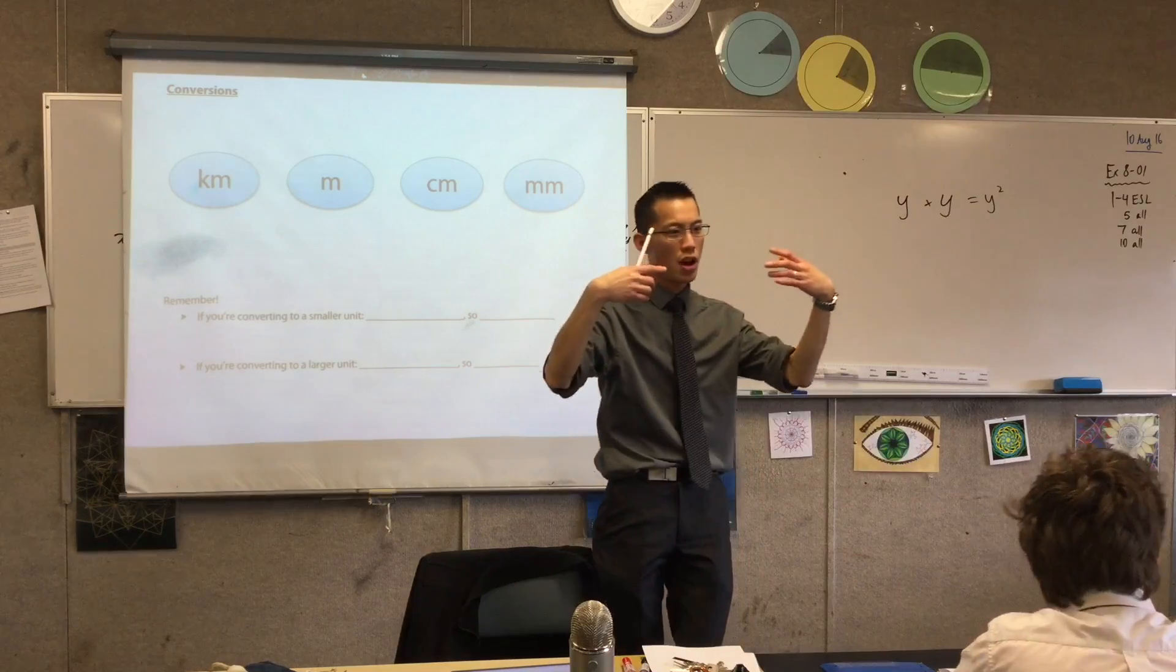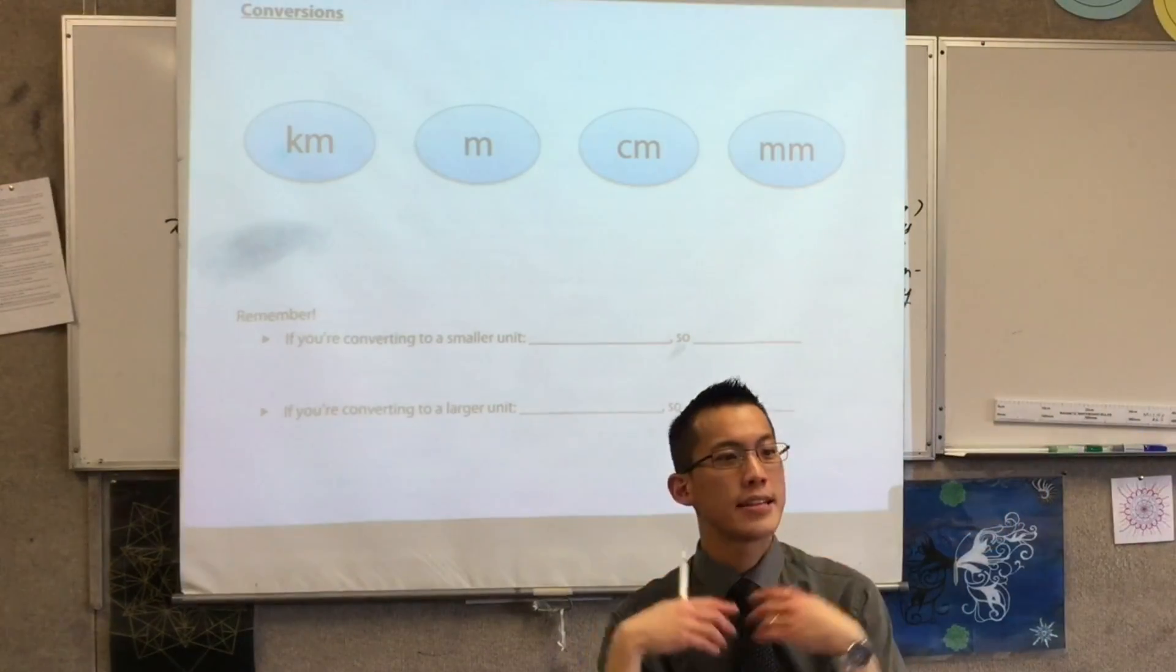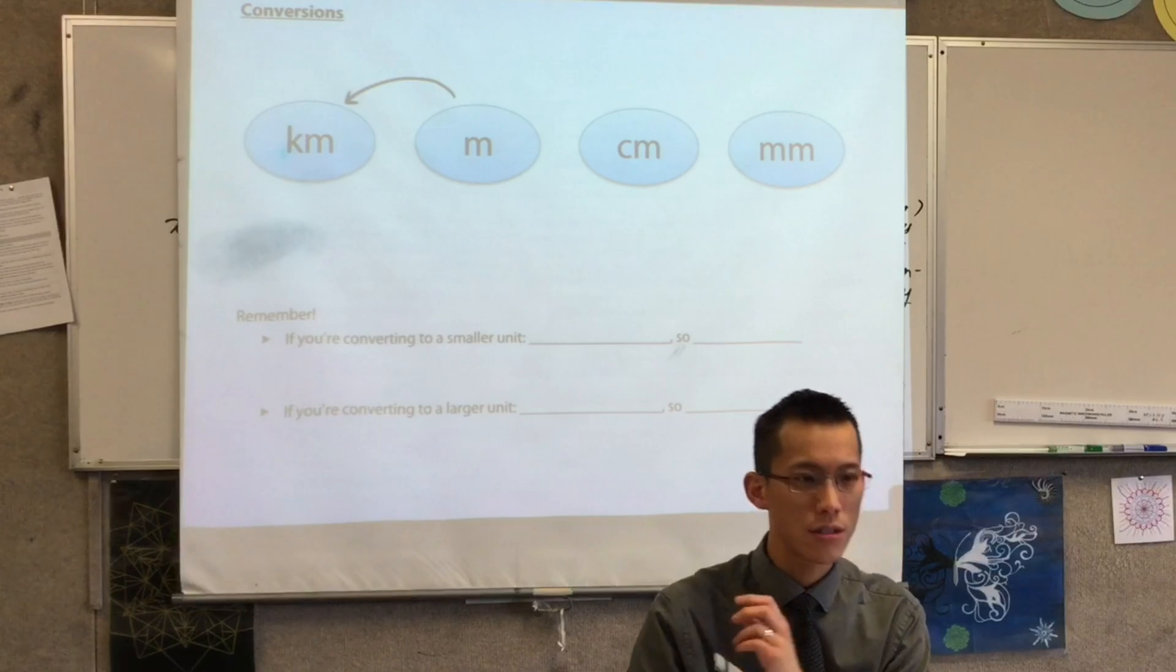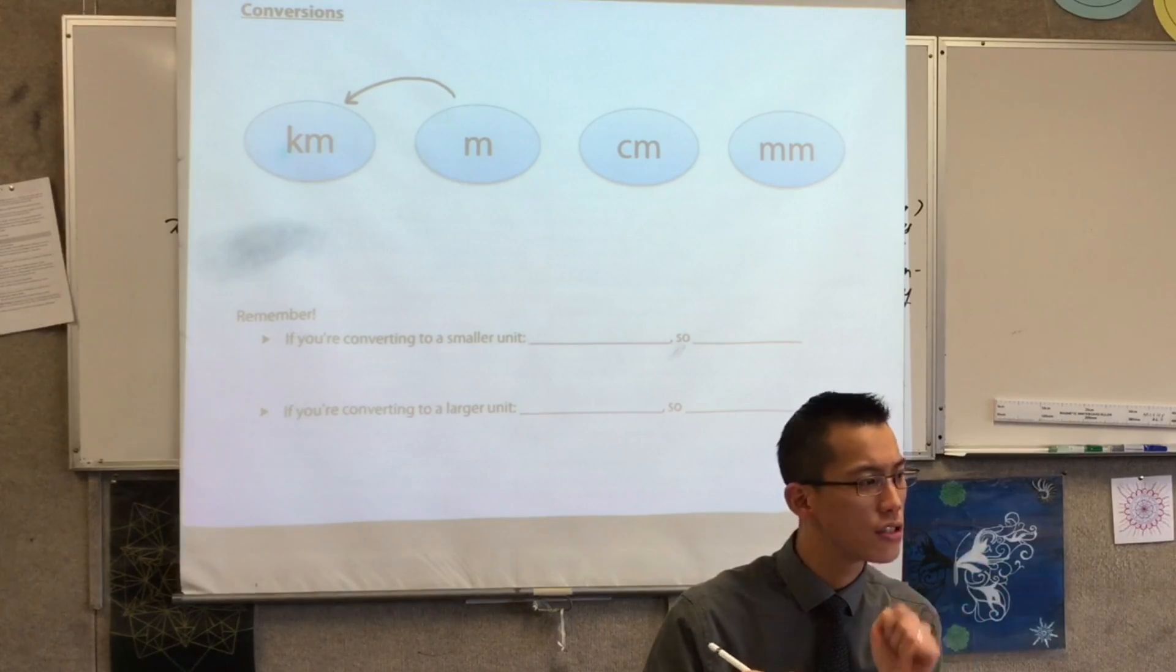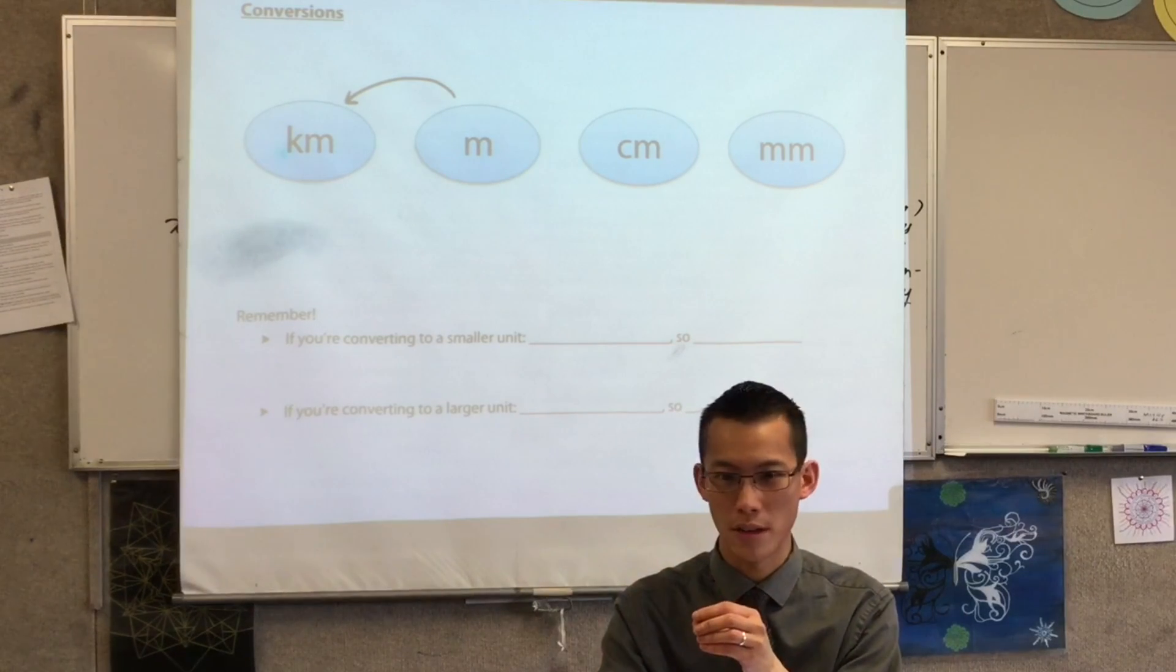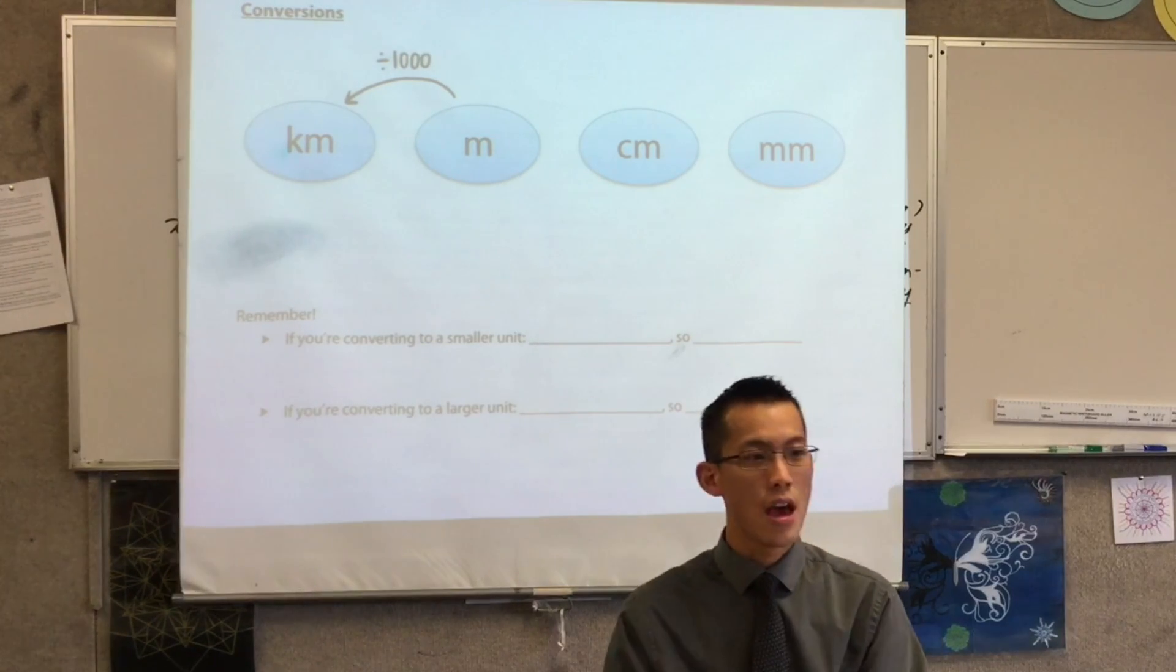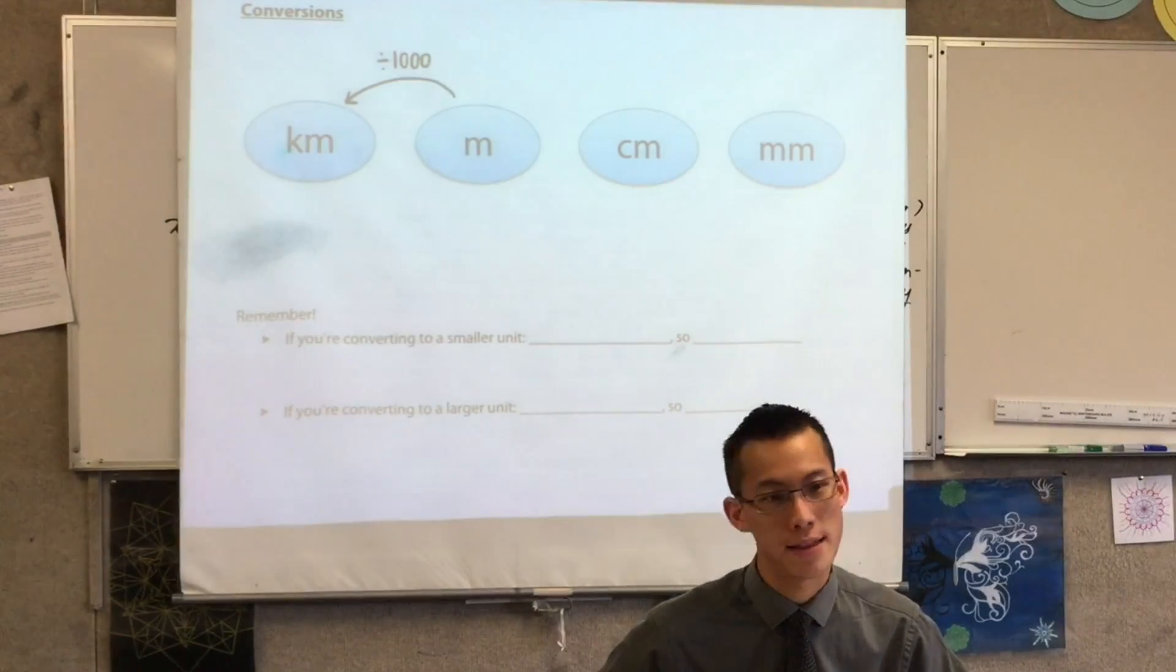So how does conversion work? For example, if I told you there's a distance, it's 2,000 meters, and I want you to convert from meters into kilometers, how many kilometers is that 2,000 meters? What are you going to do with the number 2,000 to turn it from meters into kilometers? What do you reckon, Christian? Okay, so if you had a number of meters, if you wanted to turn it into a number of kilometers, you should divide by 1,000.